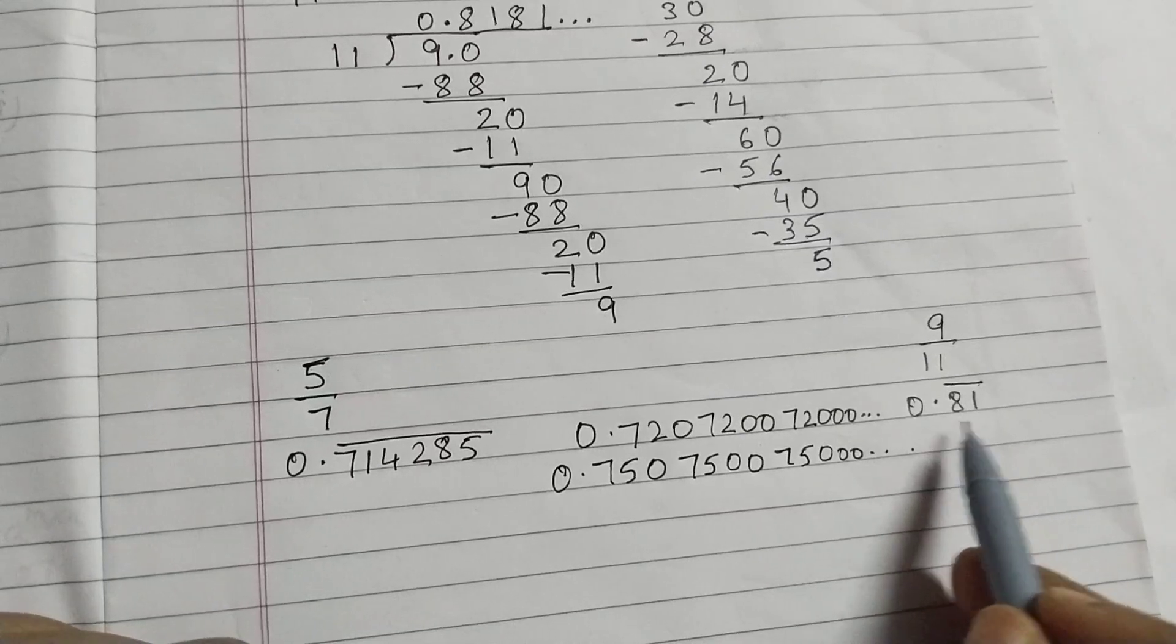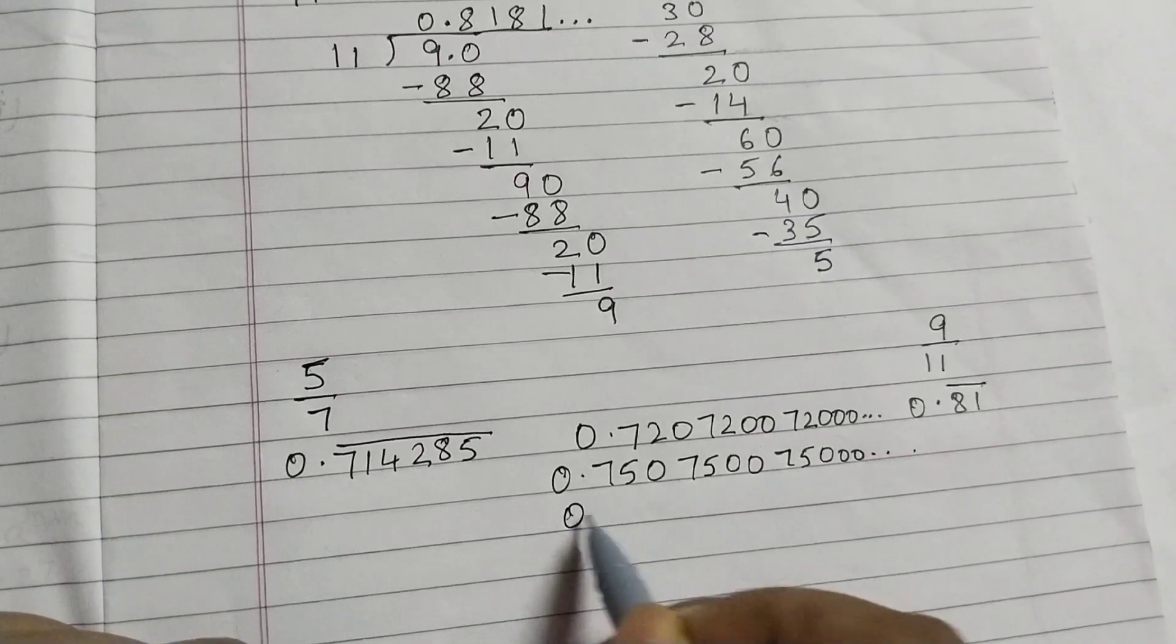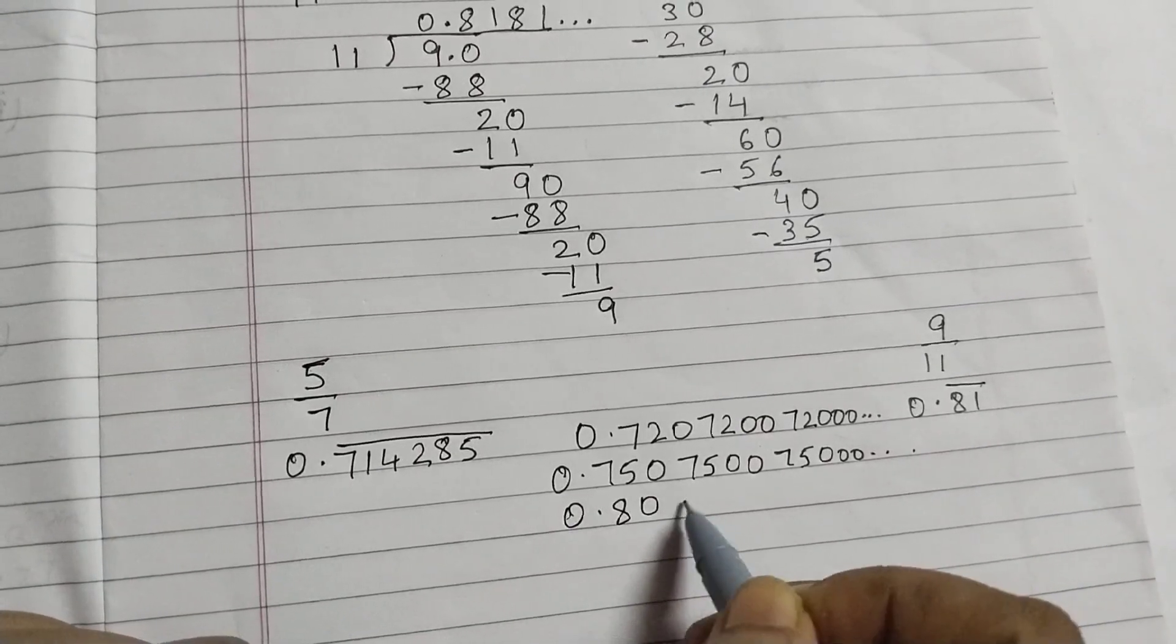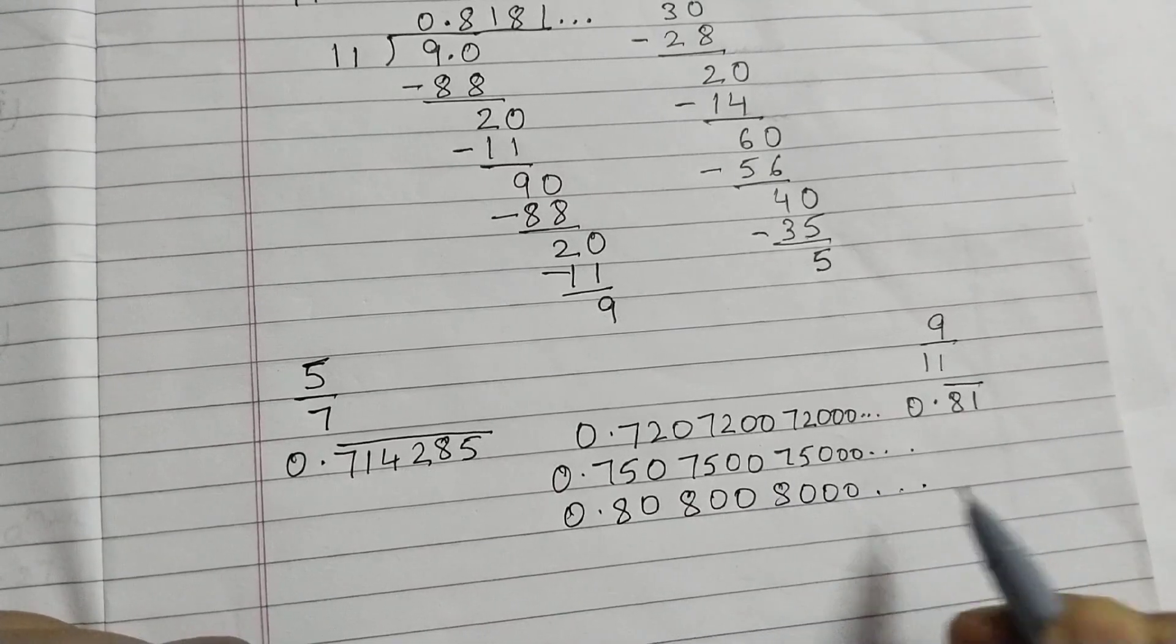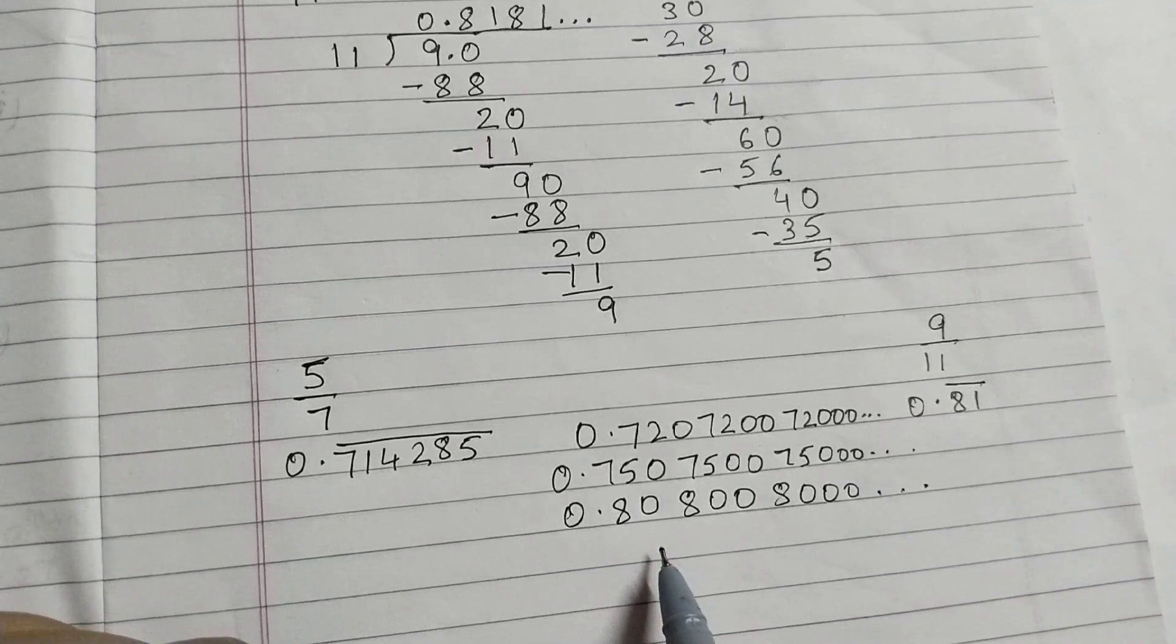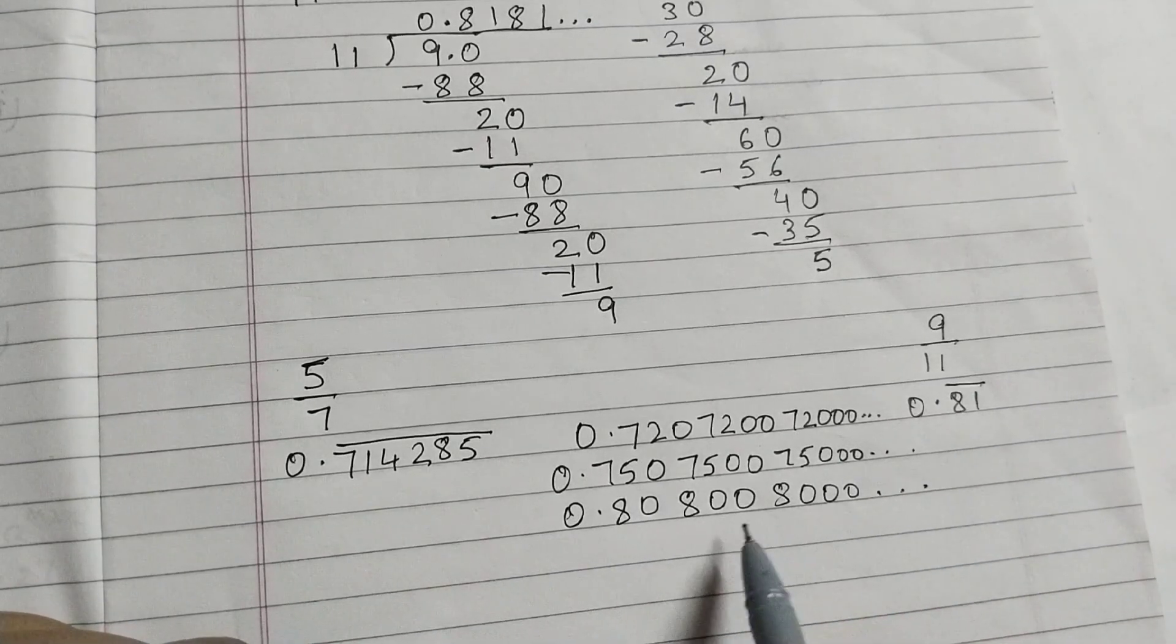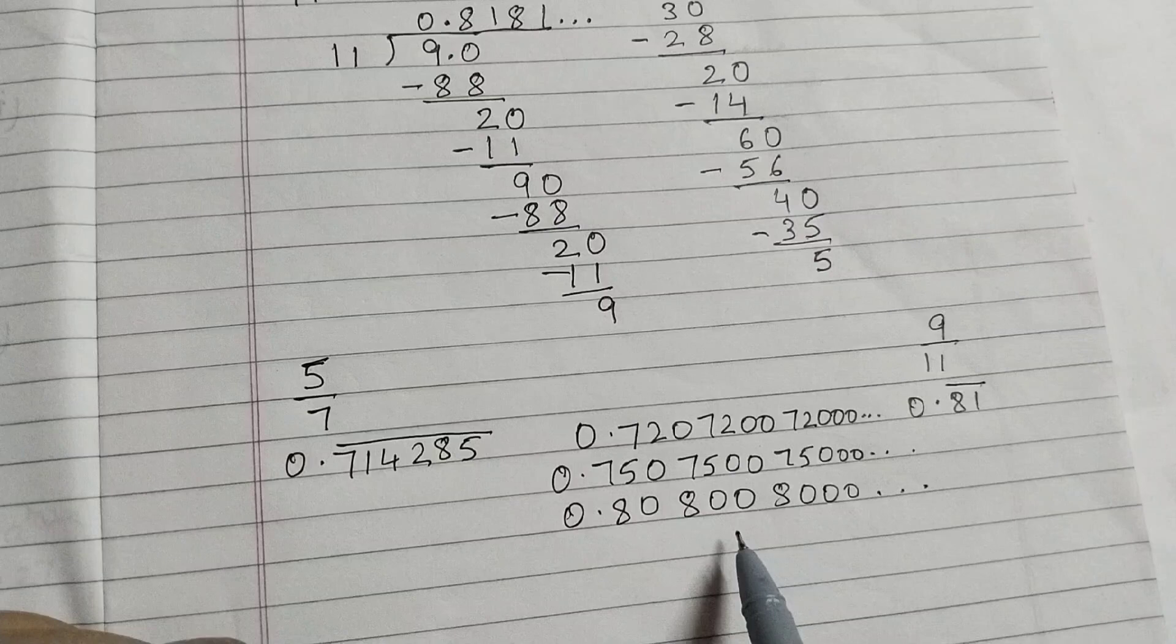And we will take one closer to 0.81. Say 0.80800, 8000, dot, dot, dot. So these are the 3 different irrational numbers between these 2. You can have infinitely many irrational numbers.